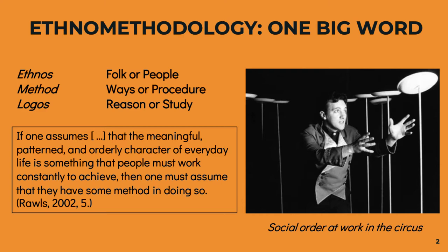Garfinkel founded ethnomethodology. What do we mean by this giant word? Let's break it down into three key components. First, we have ethnos, Greek for nation — we'll take it to mean people or folk. Next, method, in reference to the ways, means, or procedure employed to a particular end. And finally, logos, in terms of the reason or study of something. So we can say that ethnomethodology is the method that folk use to accomplish things — specifically, social order.